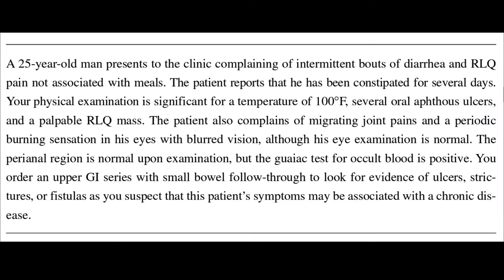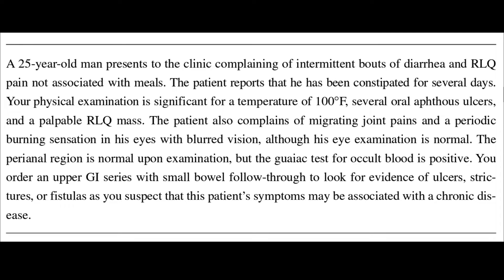Now morphology and clinical manifestations we will be seeing in a case-based format. A 25-year-old female presents to the clinic complaining of intermittent bouts of diarrhea and lower right quadrant pain not associated with meals. The patient reports constipation for several days. Physical examination is significant with a temperature of 100°F, several oral aphthous ulcers, and a palpable right lower quadrant mass. The patient also complains of migratory joint pains and periodic burning sensation in the eyes, but eye examination was normal. The perianal region is normal but the guaiac test is positive for occult blood. You order an upper GI series and small bowel follow-through to look for ulcers, strictures, or fistulas, as you suspect the patient's symptoms may be associated with a chronic disease. This is the classical presentation of a patient with Crohn's disease.